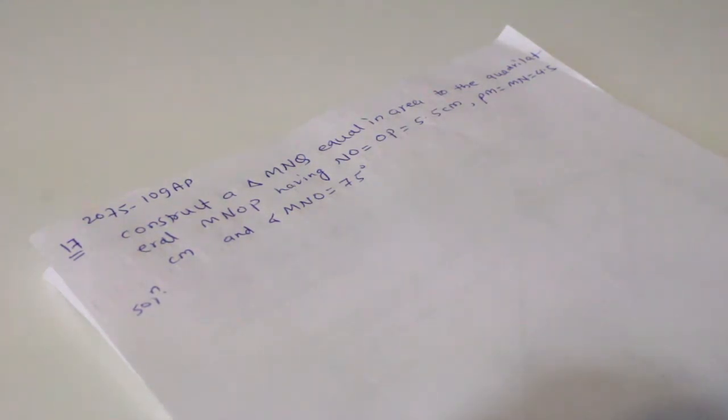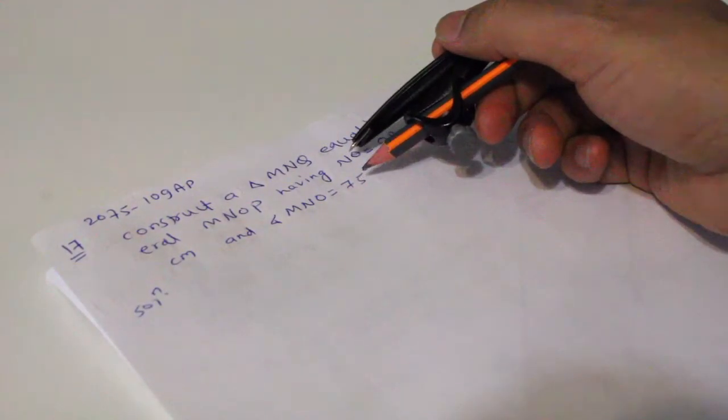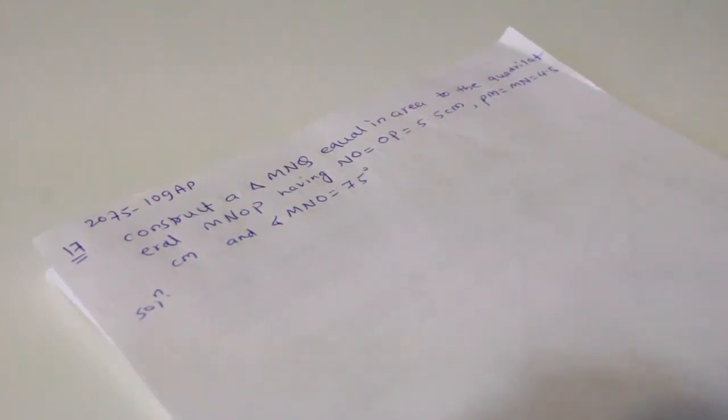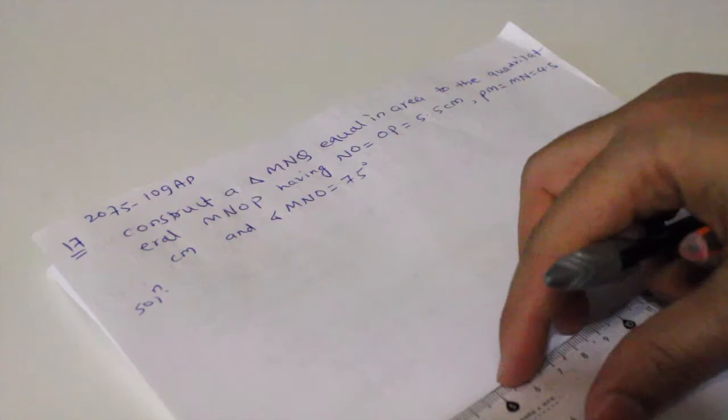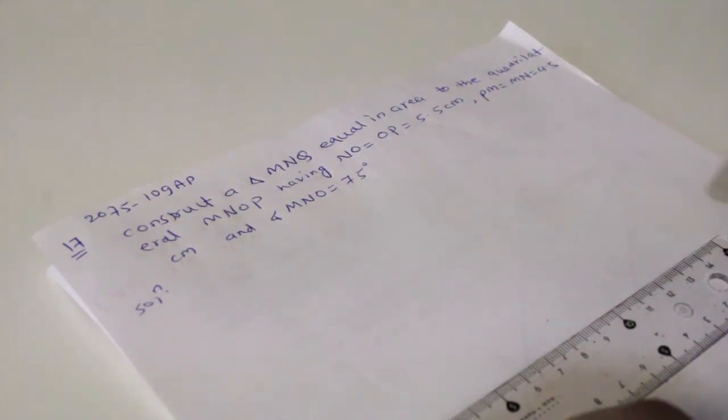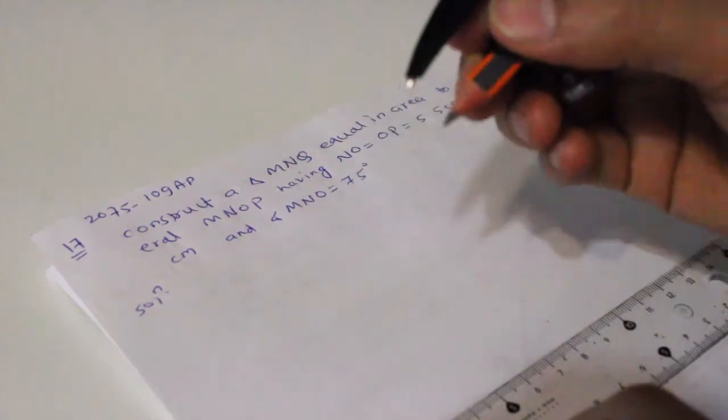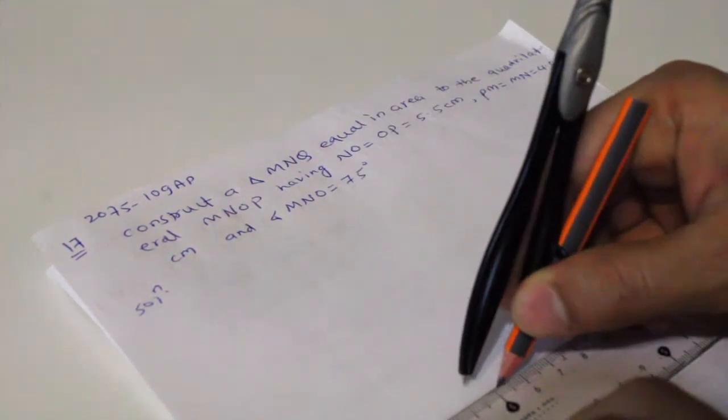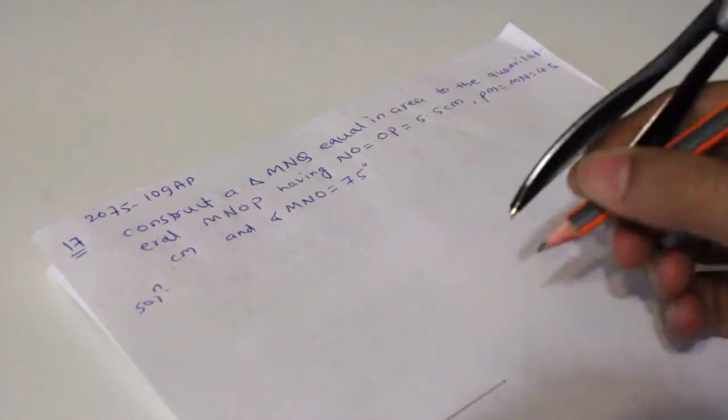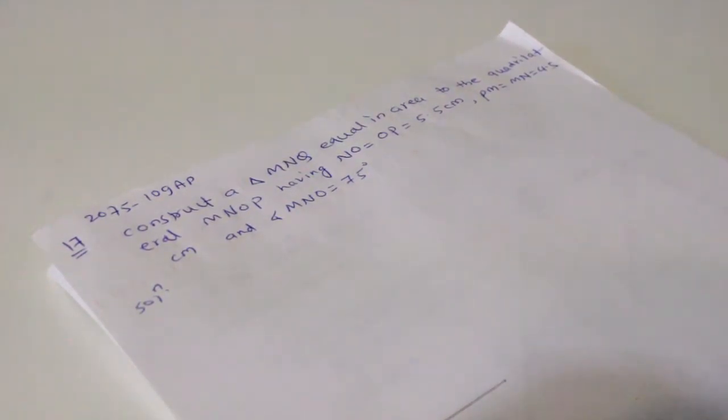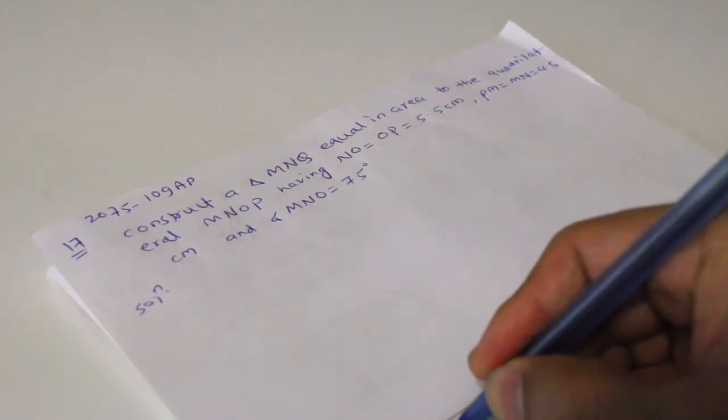Okay, so what I have to do, NO equals 5.5 cm. Let me draw one of the line segments, which is NO equals to 5.5 cm. Let me put that down here. I can just put down like this. So this is a point N, and then I'm going to draw 5.5 cm. This is NO, which is 5.5 cm.